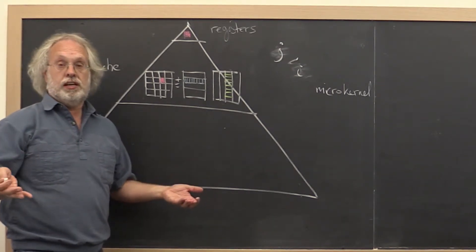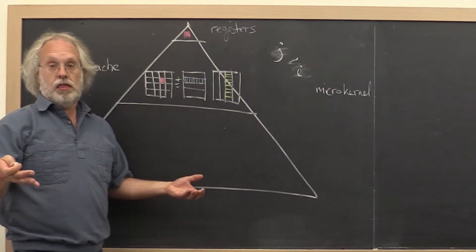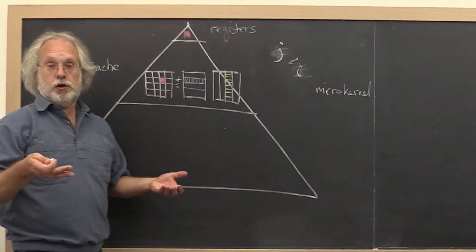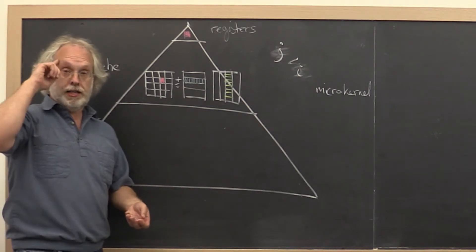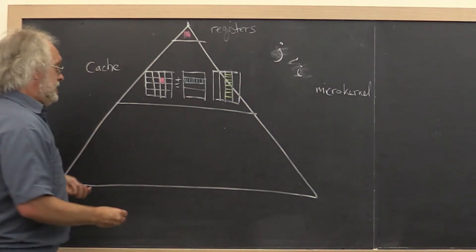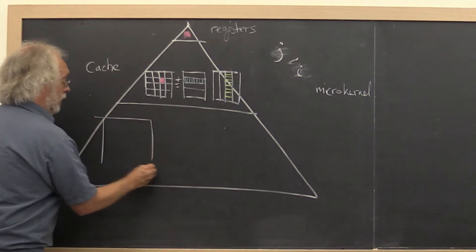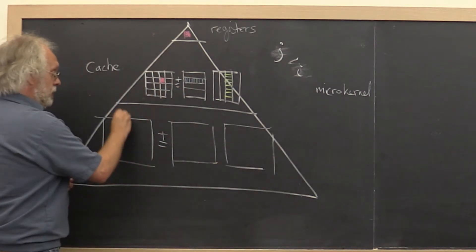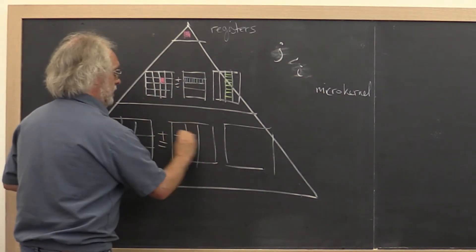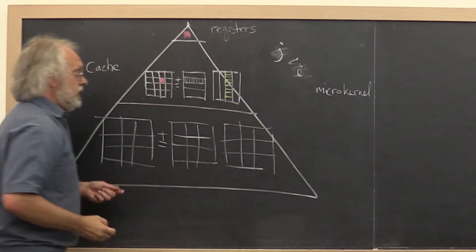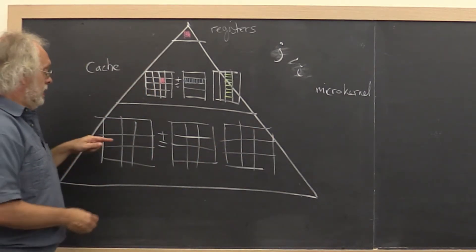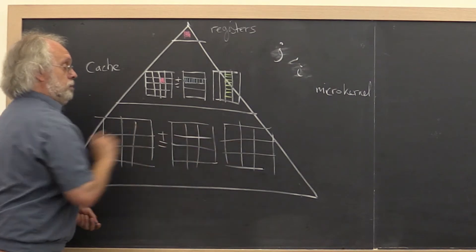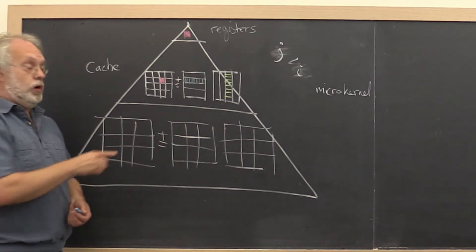Now the other thing that we've learned is that if we partition the matrix into blocks, then you can orchestrate your complete matrix-matrix multiply as a sequence of matrix-matrix multiplies with those blocks. So we should immediately recognize that if we have to do a large matrix-matrix multiply — larger than what fits in the cache — then we should be able to partition that into smaller blocks and orchestrate our computation as a loop over all of these triples of blocks, one from each of the matrices.